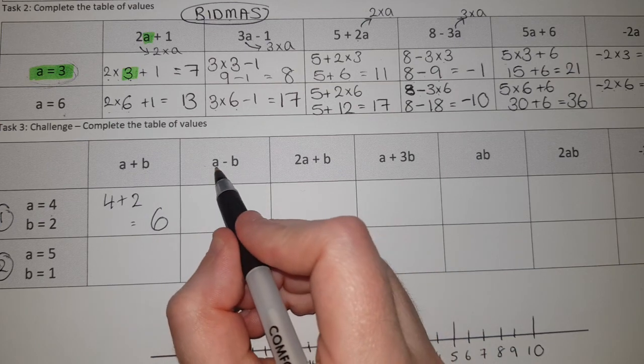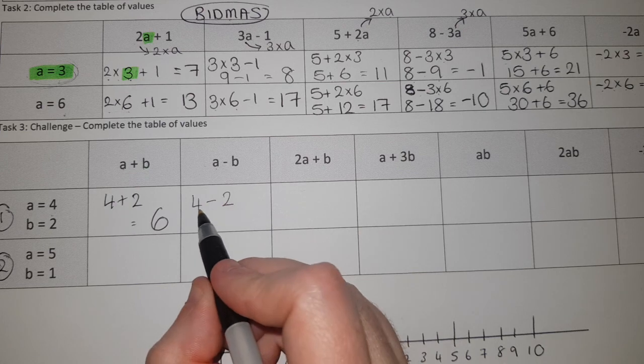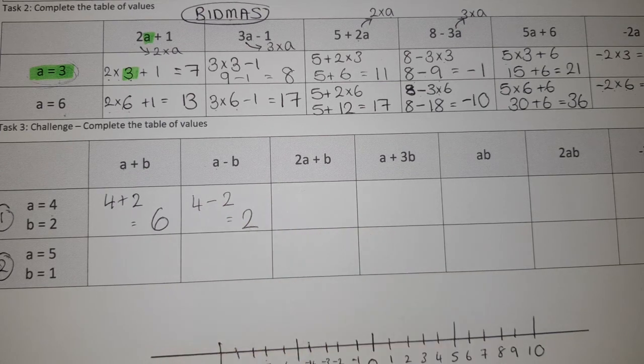On the next one, A is four, B is two. It now becomes four subtract two is two.